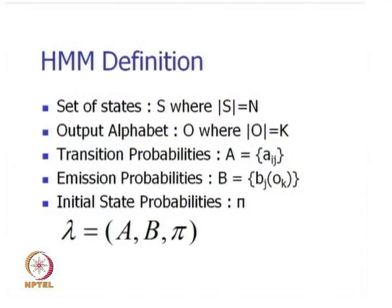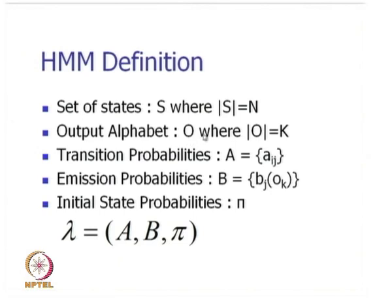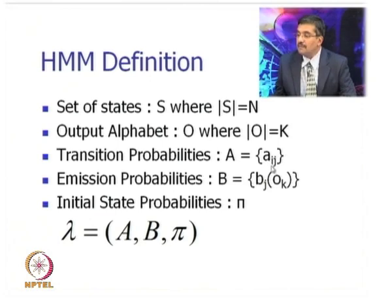We continue with the discussion. We have seen in the last class that the hidden Markov model is defined by a set of states S, where the number of states is equal to N, the output alphabet O, where the number of output symbols is K. There are transition probabilities A_ij, emission probabilities associated with the output symbols, and initial state probabilities pi. The complete machine is defined by the initial state probability, the output probability, and the transition probability.